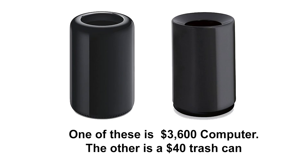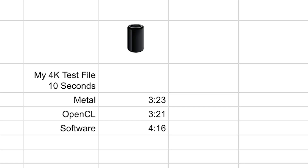It's five streams with GPU accelerated effects on all of the streams, and they're all overlaid on top of each other, so it really pushes the system hard without having to run a long test. For the Mac Pro 2013, I did just 10 seconds to see if Metal, OpenCL, or software was the better option. Metal took 3 minutes 23 seconds. OpenCL took 3 minutes 21 seconds. And software took 4 minutes and 16 seconds. So if we extrapolate that out, OpenCL, like always, is still the best option on the 2013 Mac Pro.